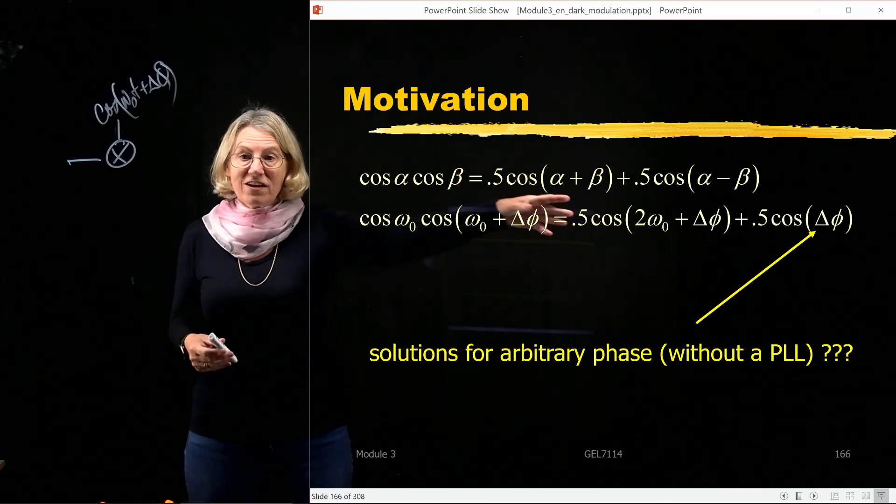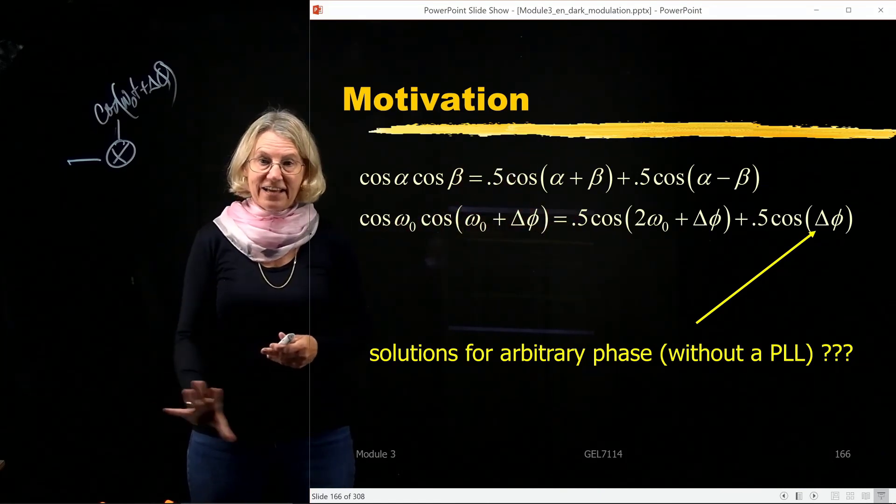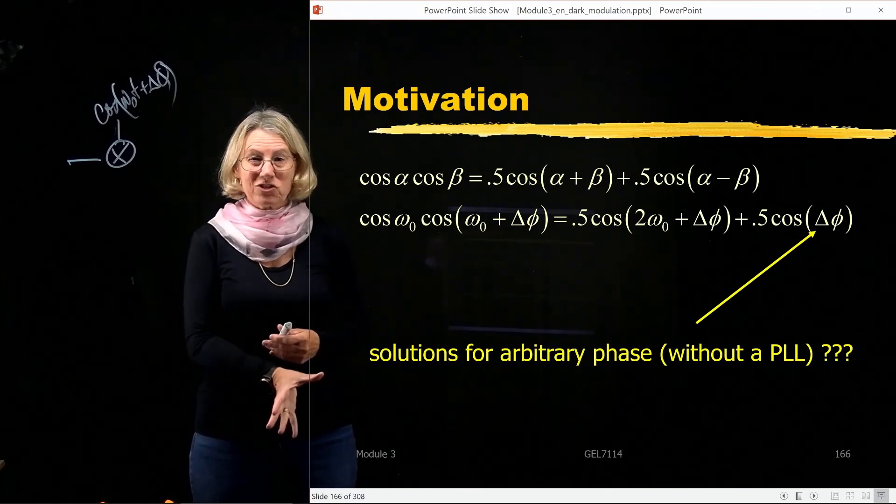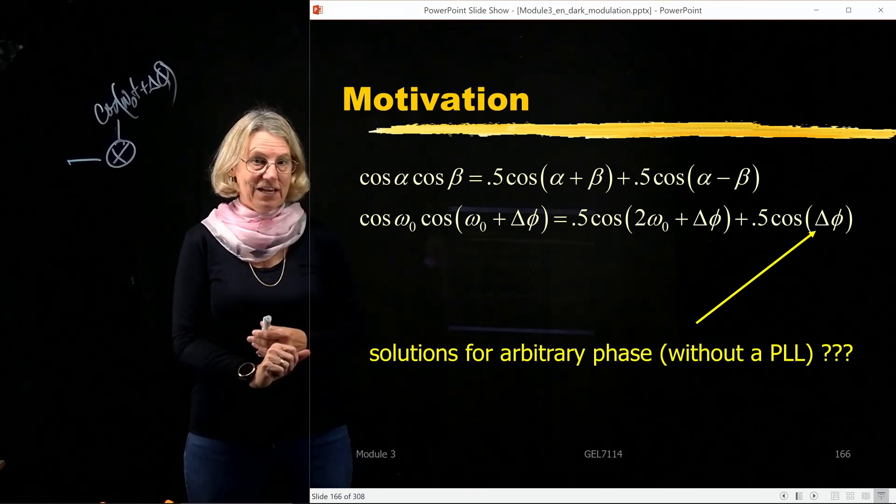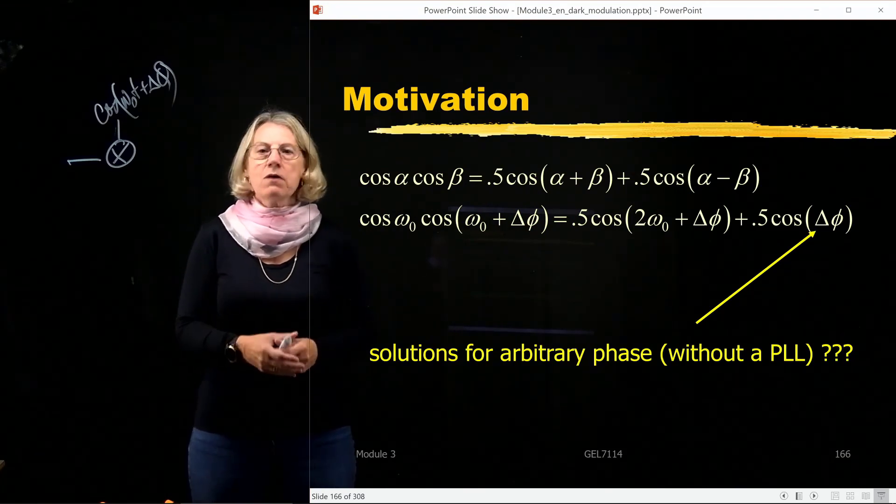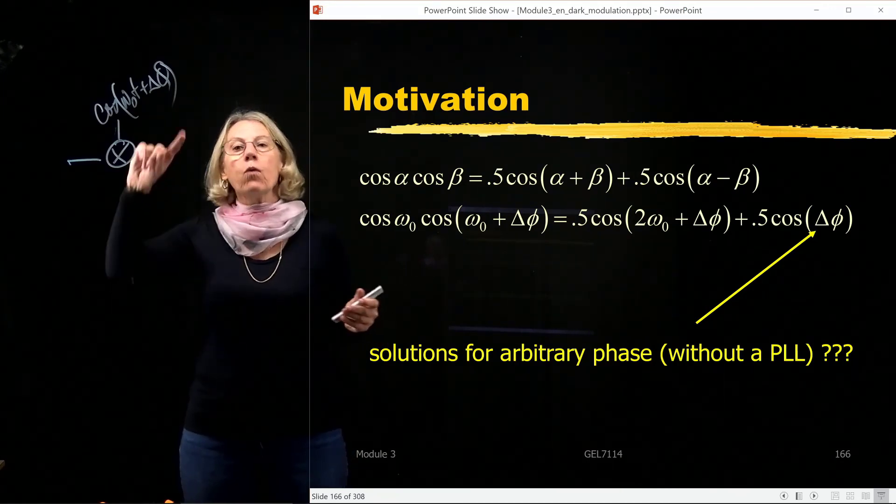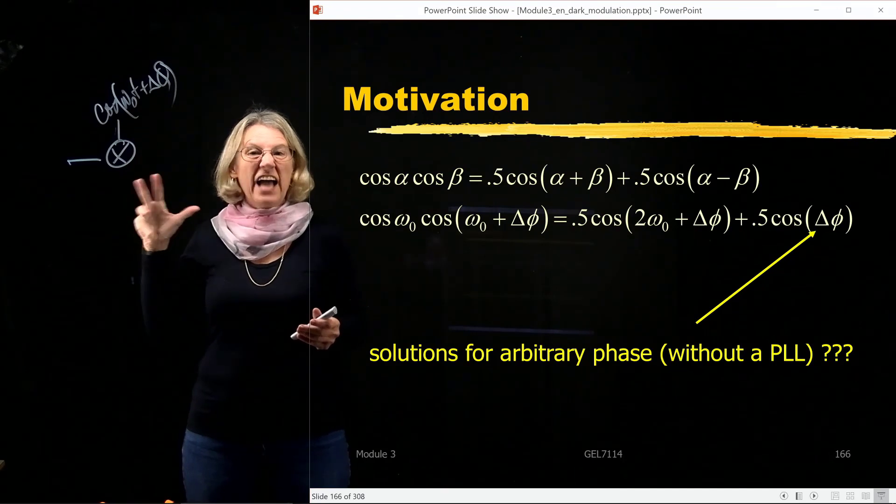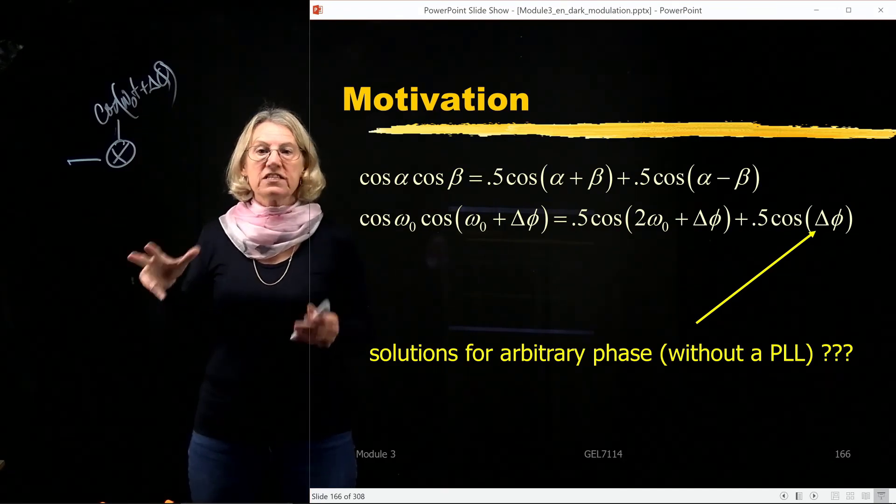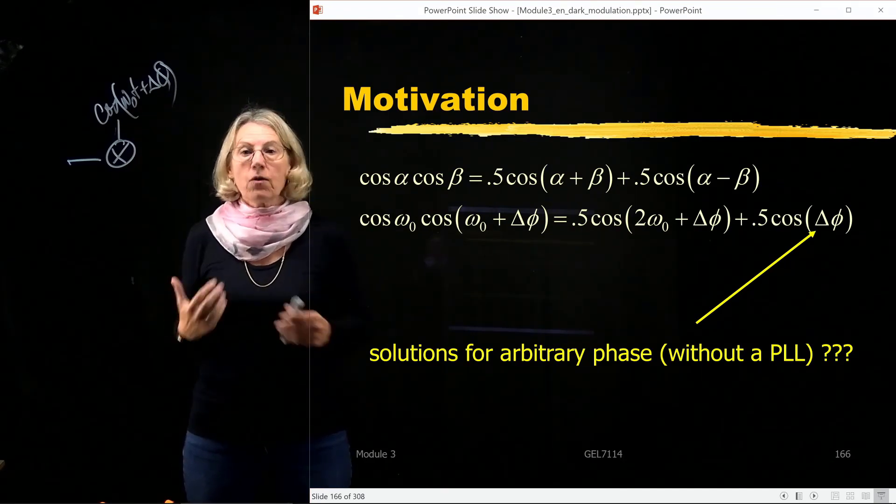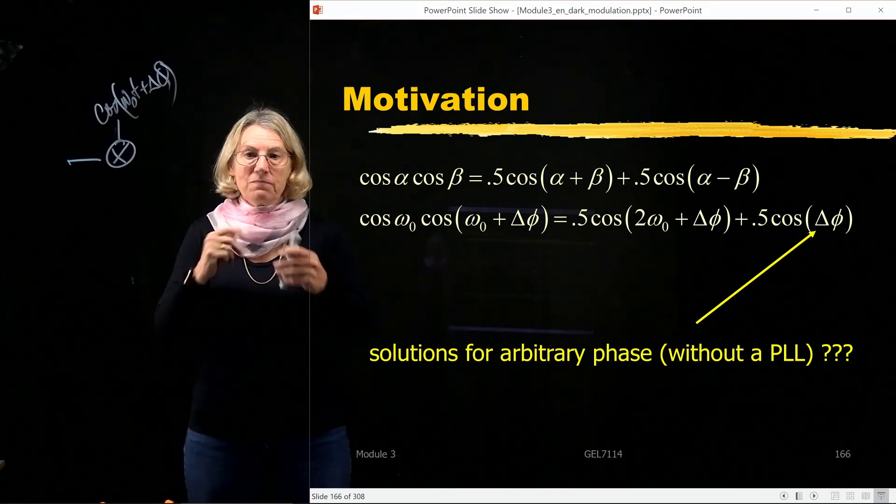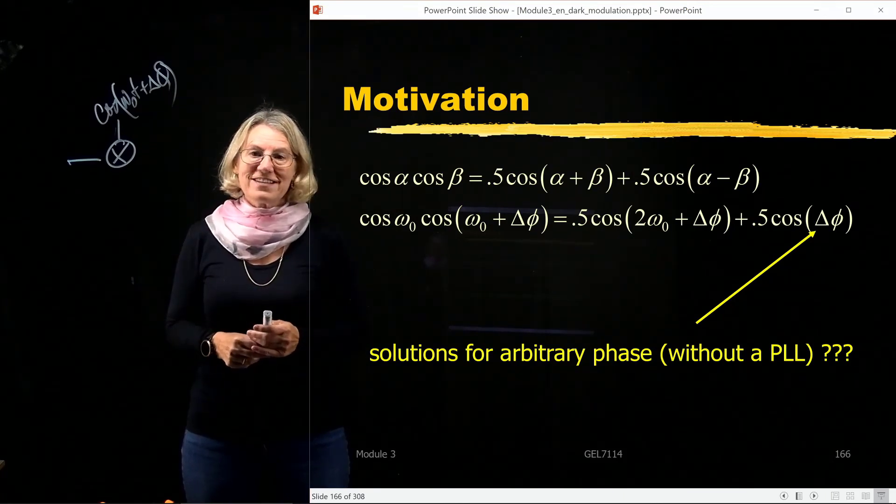So if I end up getting something that's proportional to the cosine squared of Δφ, and I add to that the second branch, which is something that's proportional to the sine of Δφ squared, and I sum them, then I'll get cosine squared plus sine squared. It'll always give me one no matter what the rotation is. So that's kind of the trick we're using with a different structure in a non-coherent receiver. So let's go on and see how that works.